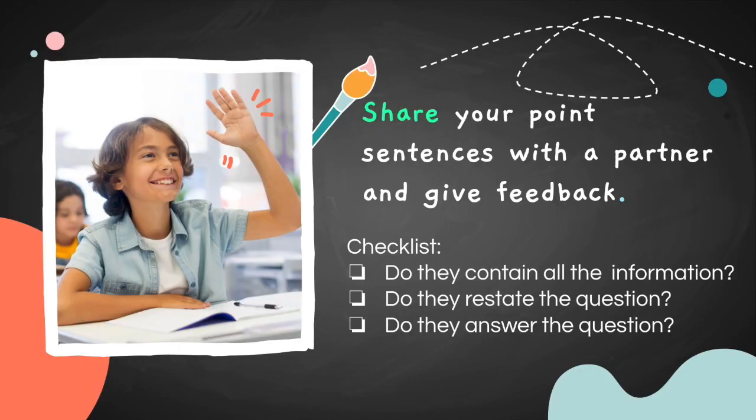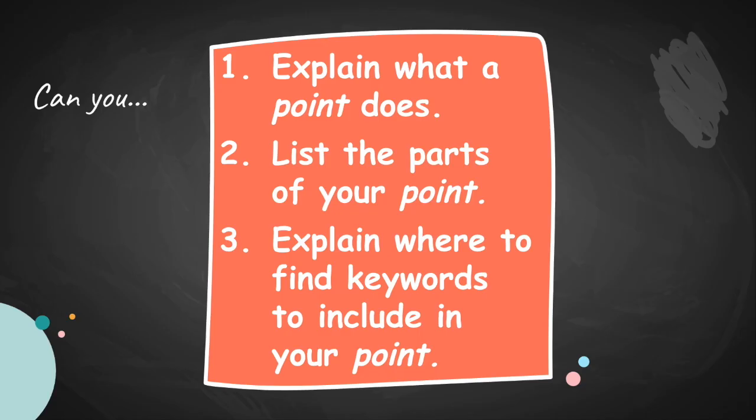Now that you've written all three points to each one of the three questions, go ahead and share your point sentences with a partner, and give feedback to one another on what your partner did well and what they can improve on. Be sure to look at the checklist — does your partner's point contain all the information? Do they restate the question, and do they clearly answer the question? That concludes our information about the point.